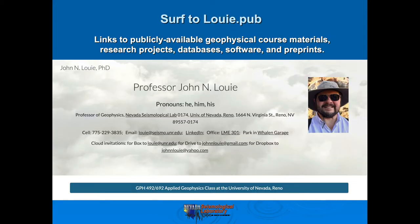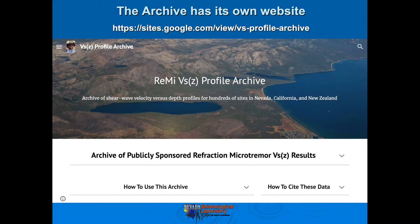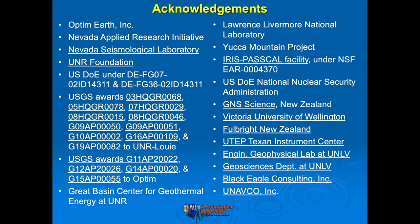If you go to louie.pub you'll see links to all of my publicly available resources including this database, and you scroll down to the Shear Velocity versus Depth VSZ profile archive. The archive has its own website and you can open any of the text boxes to see more information. It's a good time to acknowledge all the agencies, national labs, New Zealand agencies and universities, and the support from Optum that went into developing this database.